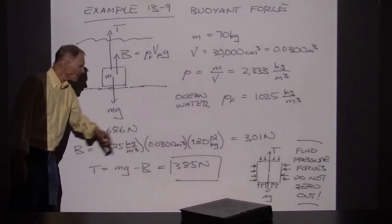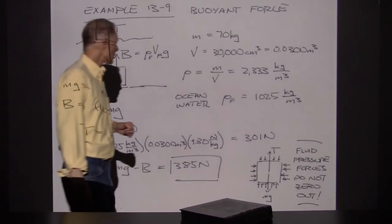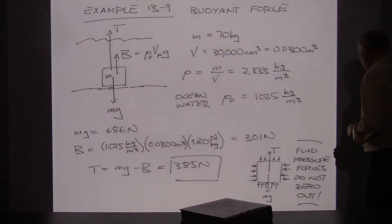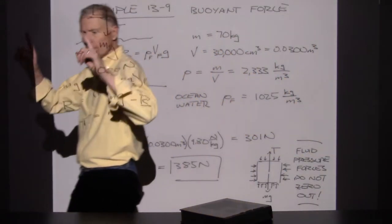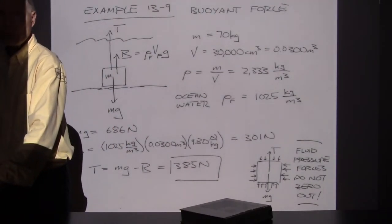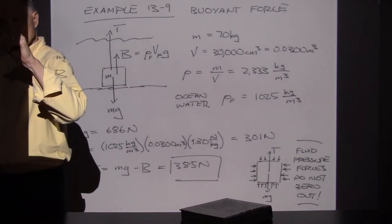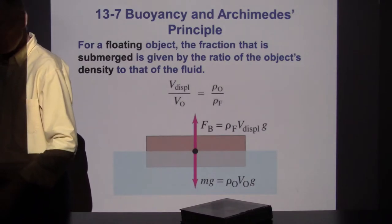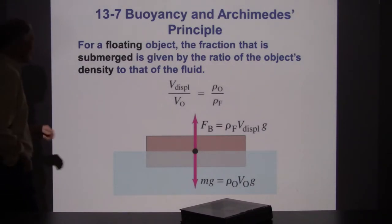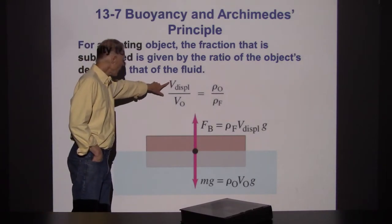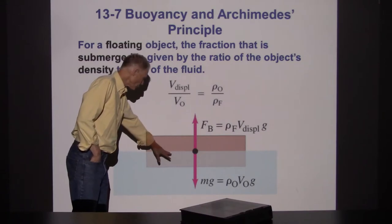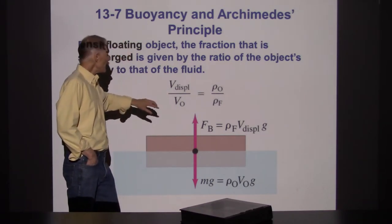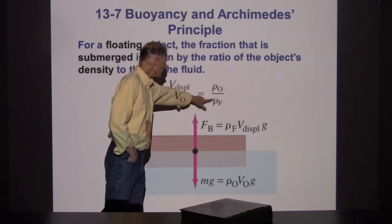The tension we have to lift with is 385 newtons. The fluid pressure produces a net upward force on everything. If it's a really dense material, it's still going to sink. If it's a low-density material, it's going to float because the buoyant force will be larger. For a floating object, the volume displaced divided by the total volume equals the density of the object divided by the density of the fluid.